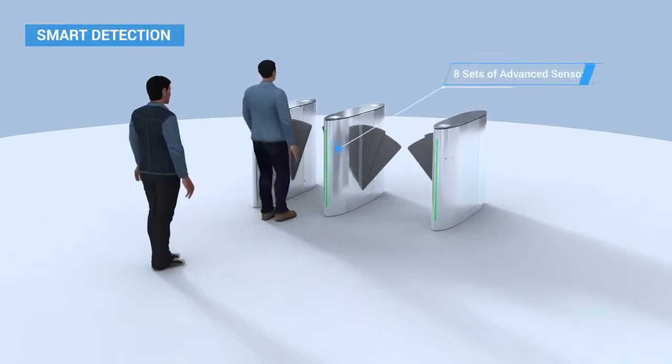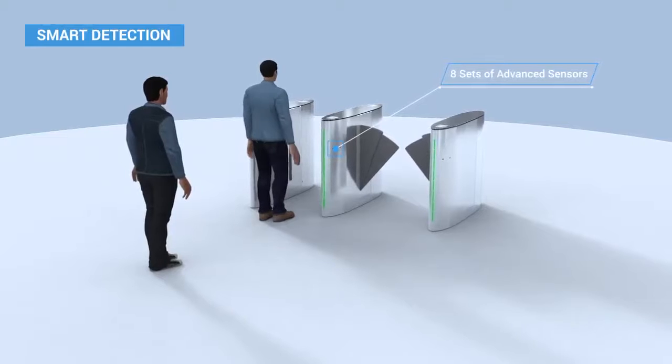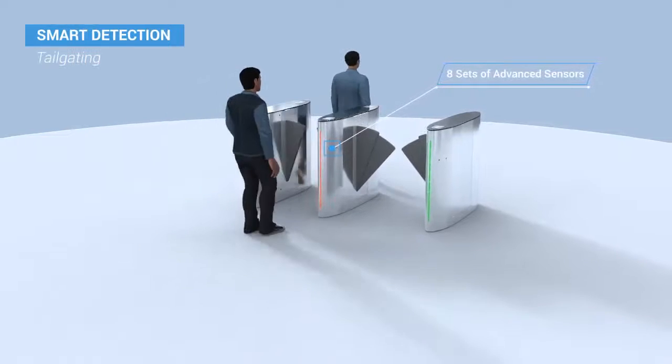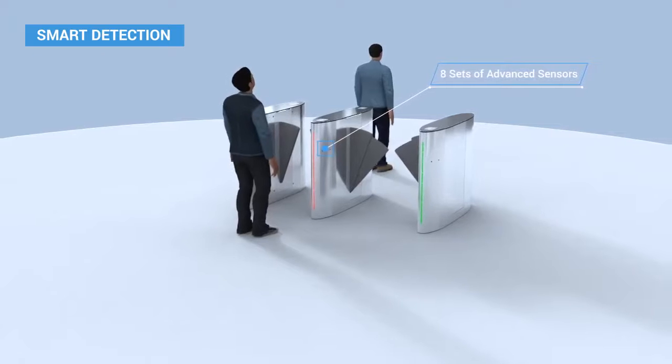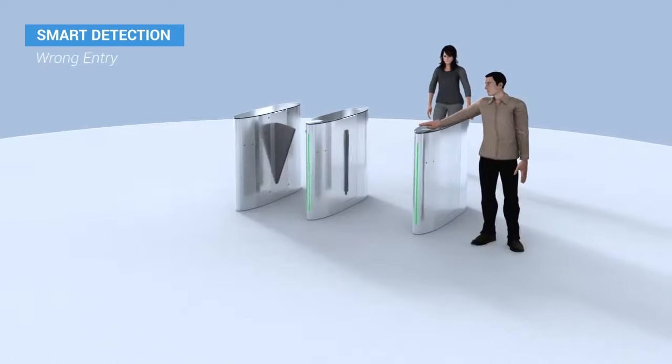Impact detection helps prevent unauthorized entry attempts such as tailgating and wrong entry.